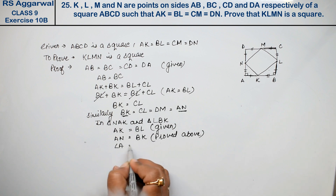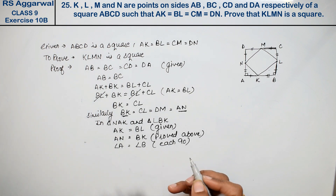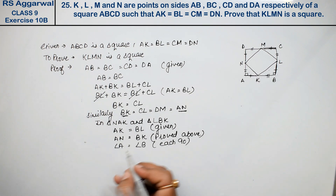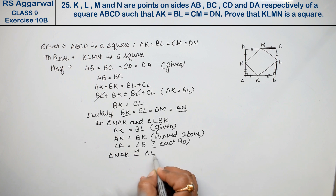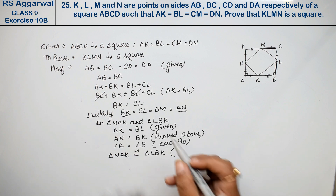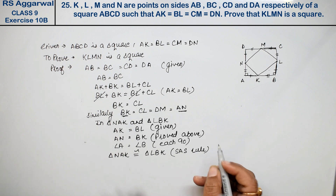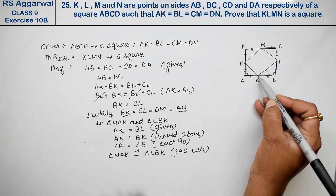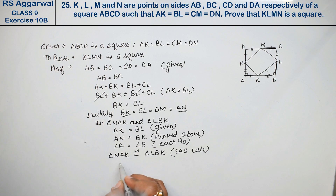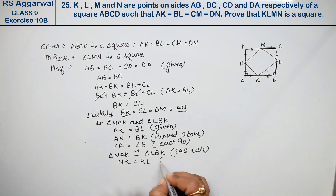And angle A equals angle B, each 90 degrees, because it is a square. So these triangles are congruent. We can say triangle NAK is congruent to triangle LBK by SAS rule. Therefore, NK equals KL by CPCTC.